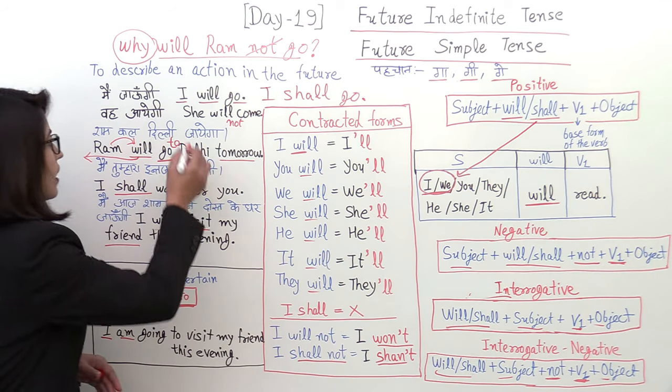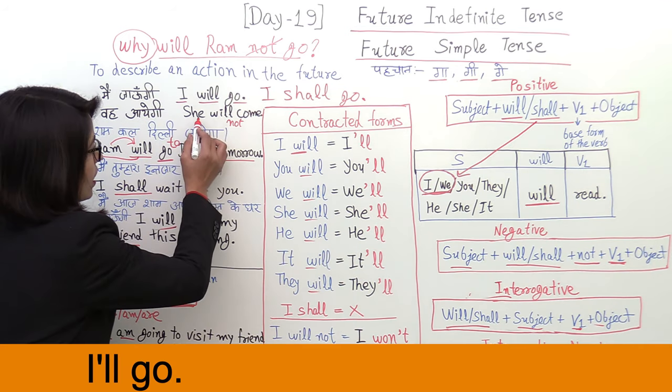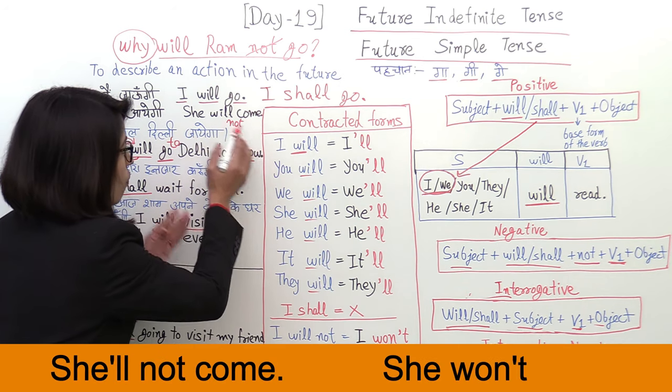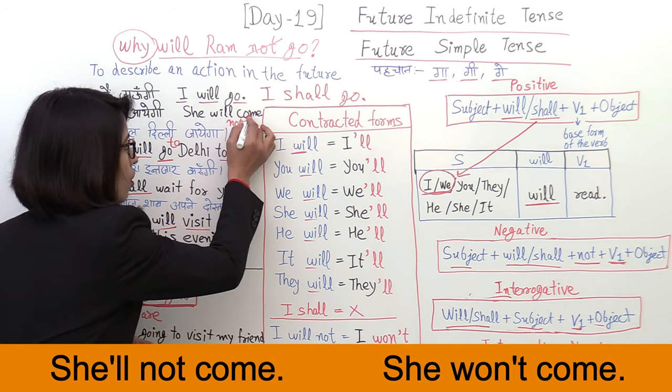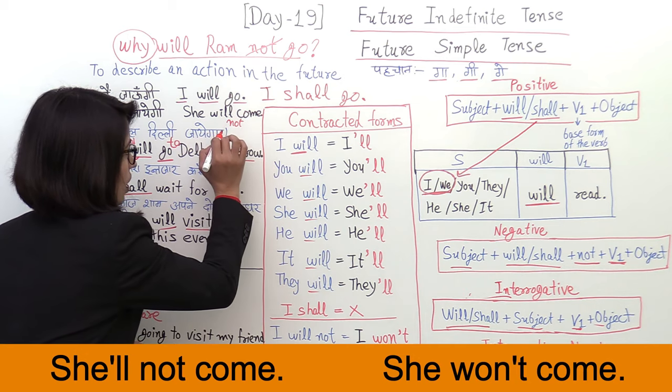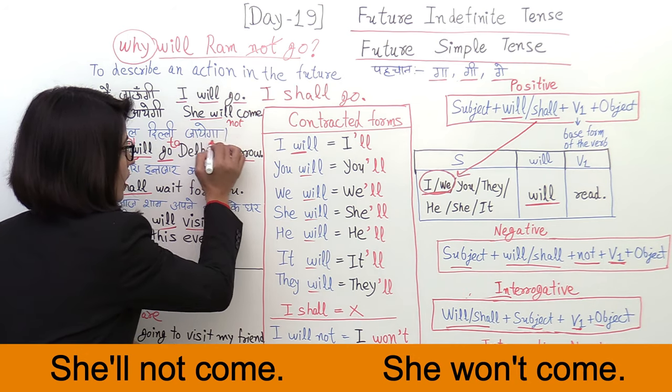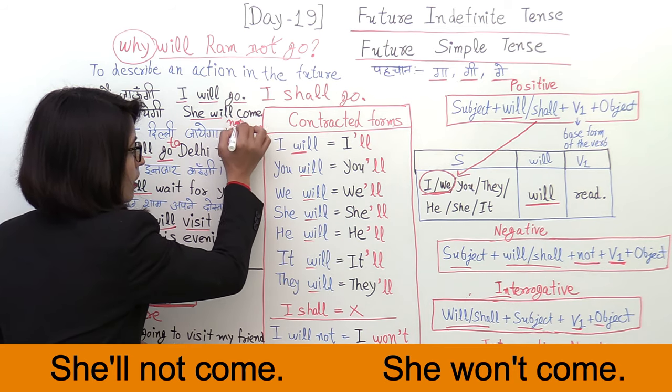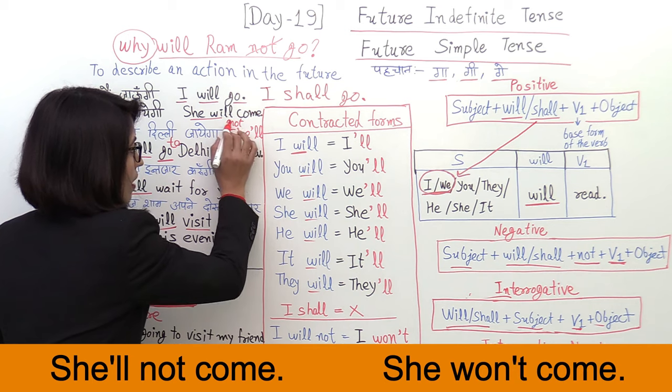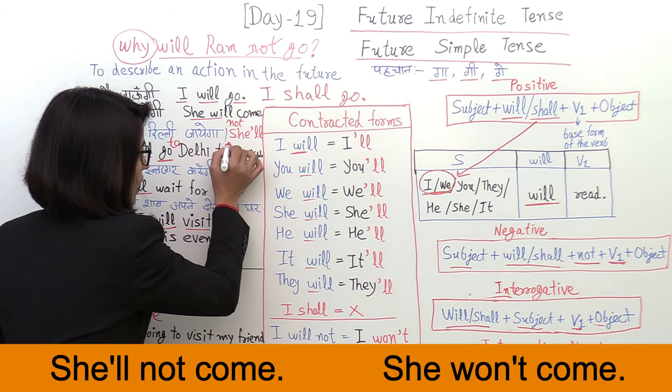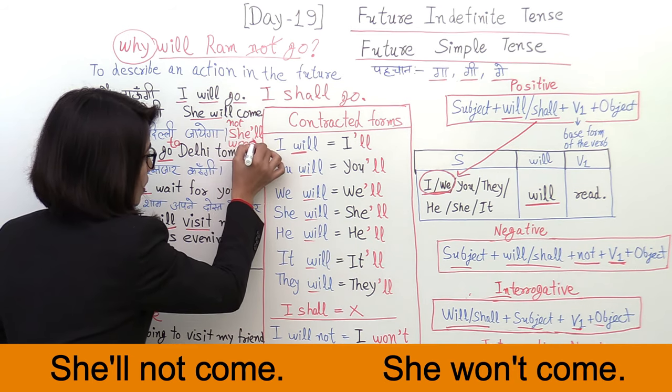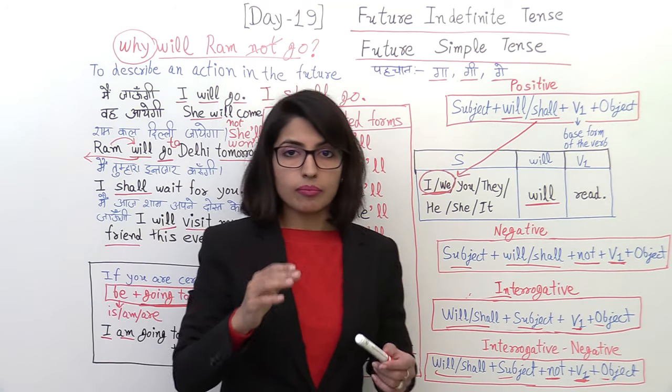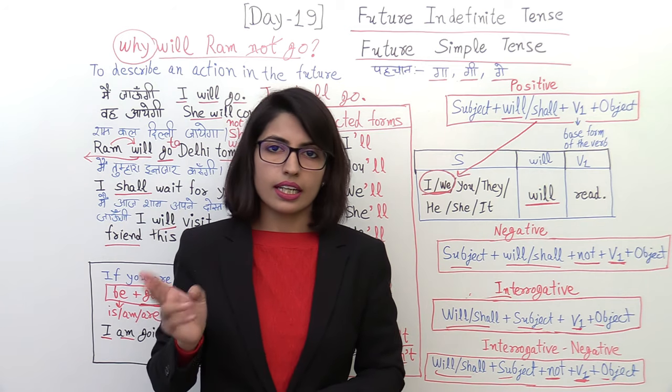When you use sentences, you can say I'll go, she'll come, she'll not come or she won't come. So she will not come, you can use two contractions. You can use she and will, she'll not come, or you can use will not, she won't come. So in one sentence you can use contractions in two ways.